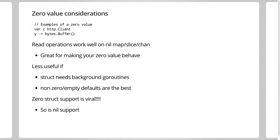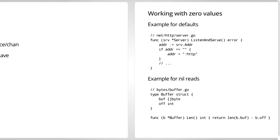Examples of the zero value would be just making a variable or assigning it. One great property is that read operations on nil built-ins actually work in Go — unlike Java where a null ArrayList throws an exception when you call size. Using the struct directly is more difficult if you have background goroutines or some weird setup that needs to happen. In those cases, people do use constructor functions and that's okay, but I'd strongly push you toward making the struct itself work.